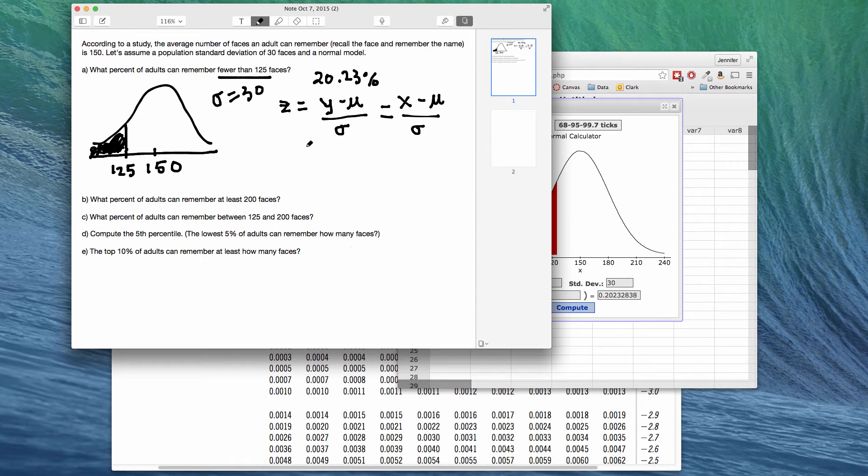In our example, we have 125, that's the cutoff that we're using, minus the mean of 150, and then we divide by 30. That was our standard deviation. So take 125 and subtract 150, and we'll get an answer of negative 25. That's because we're below the mean, we'll get a negative answer, and then divide by 30. So we have negative 25 divided by 30.